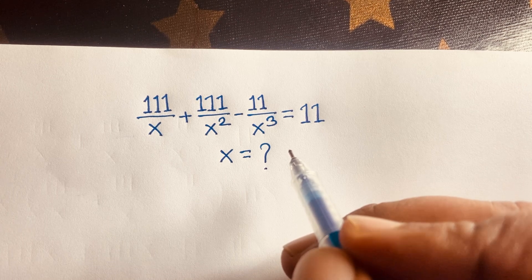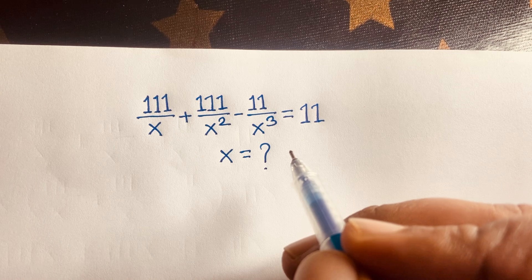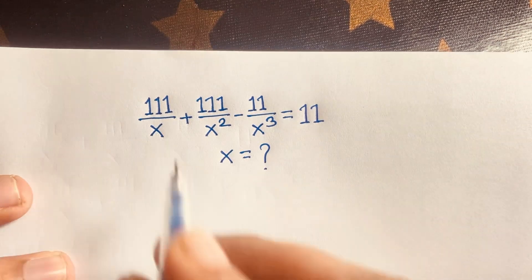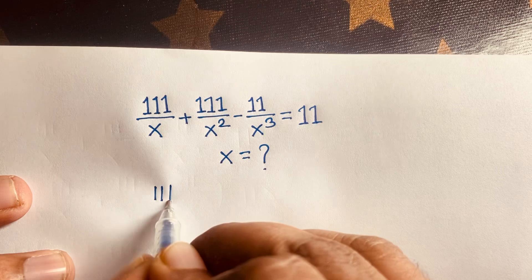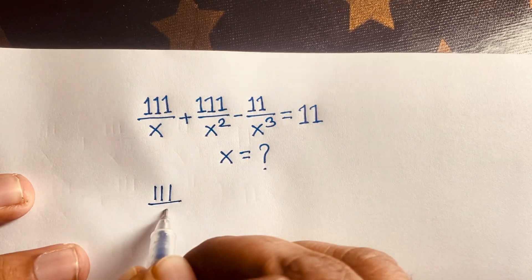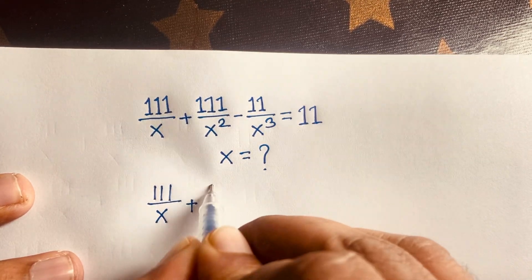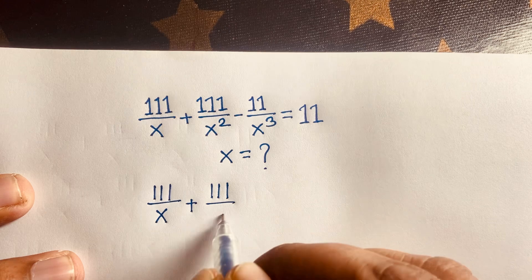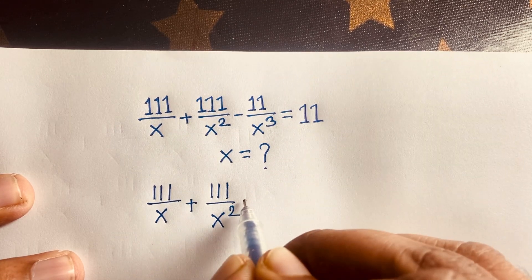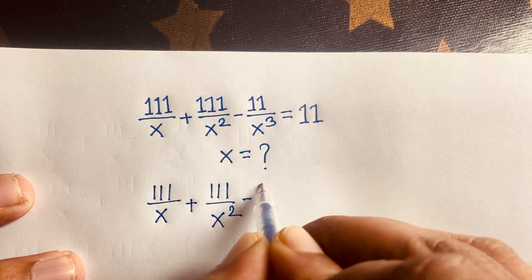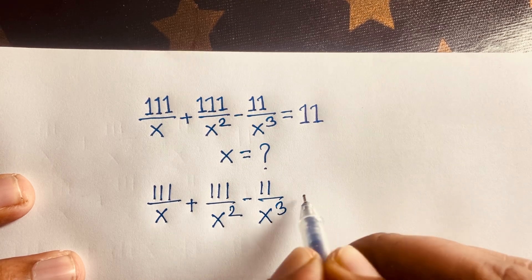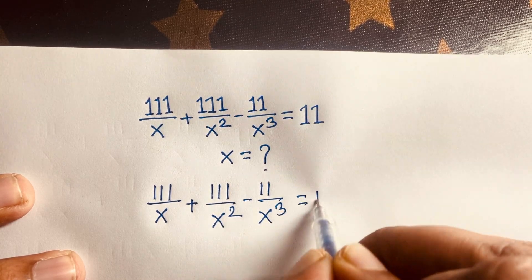So how to solve this question? It is an interesting math problem, so let's start. Our equation is 111 over x plus 111 over x squared minus 11 over x cubed is equal to 11.